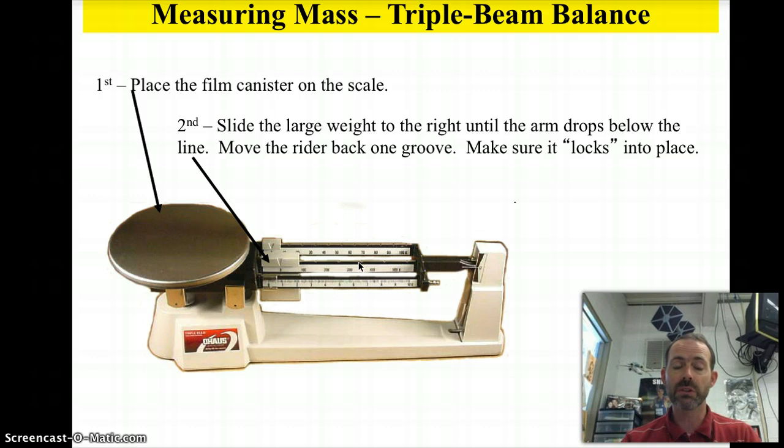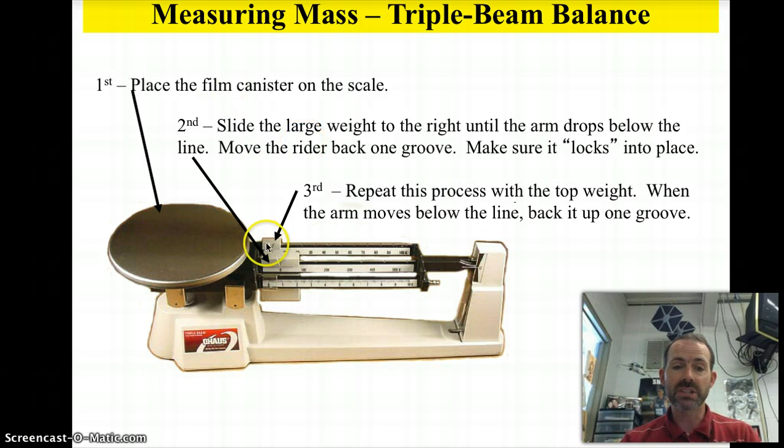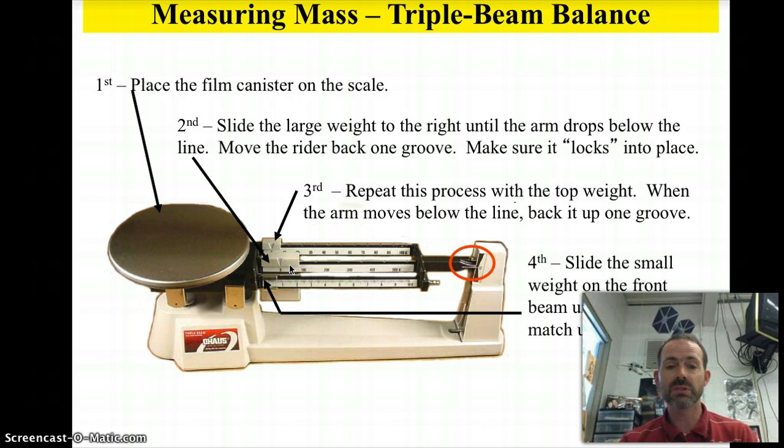So you slide the largest one first till it drops down, then move back one. Then you repeat the process with the bar that's in the back. When it drops below the line, move it back one groove. And then what you do is you slide the small weight. Right here, this will just slide across, there are no grooves in the front one. And you want to slide that back and forth until the line points exactly at the zero. This is just like when you go to the doctor and they move the weights across to find your weight. You're doing the same thing.